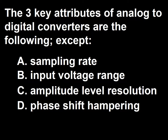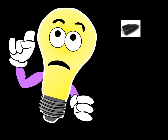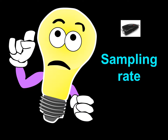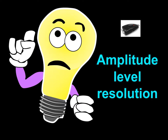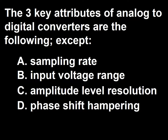The three key attributes of analog-to-digital converters are the following, except: A, Sampling Rate; B, Input Voltage Range; C, Amplitude Level Resolution; D, Phase Shift Hampering. The three key attributes of analog-to-digital converters are sampling rate, input voltage range, and amplitude level resolution. So the answer to this question is D, Phase Shift Hampering.